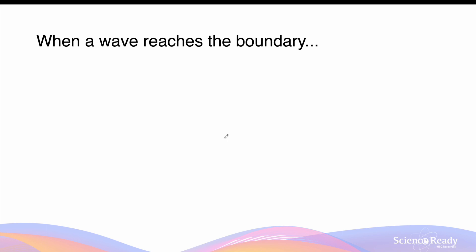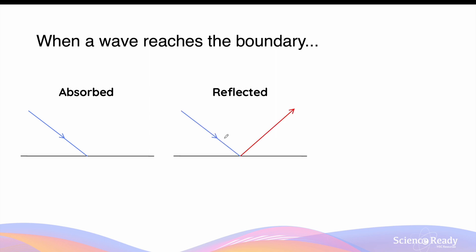Now when this transmission of energy reaches the boundary of two media or two different materials, one or a few things can happen. This wave can be absorbed by the new medium at the boundary, in which case the energy of the wave is usually transformed into a different form and stored inside the new material. The wave can be reflected, whereby it changes direction and starts propagating away from the new medium. And the third thing that can happen is that the wave can be transmitted through the new medium, which allows the continuation of the transmission of energy through it.